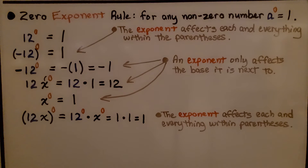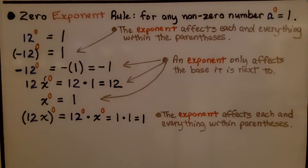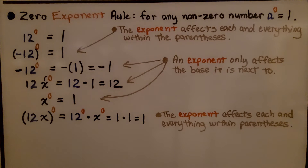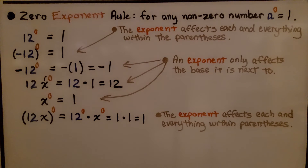The zero exponent rule says for any non-zero number a, a raised to the zero power is equal to one — a cannot be zero. So 12 raised to the zero power equals one. Here we have negative 12 inside parentheses with the zero exponent on the outside; the exponent affects everything within, the negative and the 12, so the whole thing equals one. But here we have negative 12 with no parentheses — the exponent is only affecting the 12, so we have a negative and then a one: it's negative one.